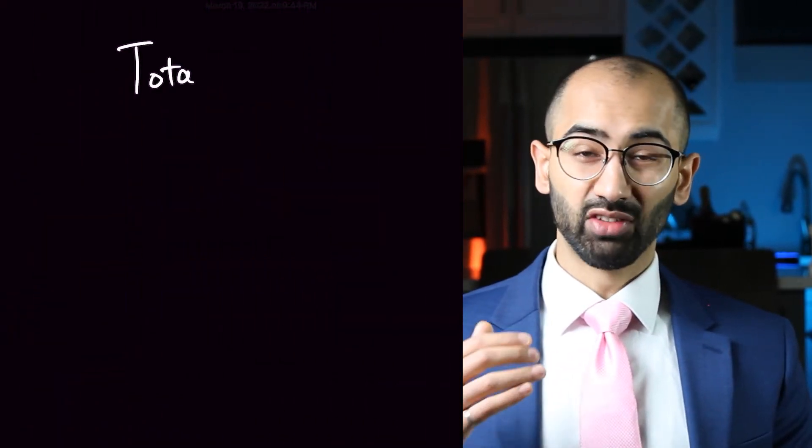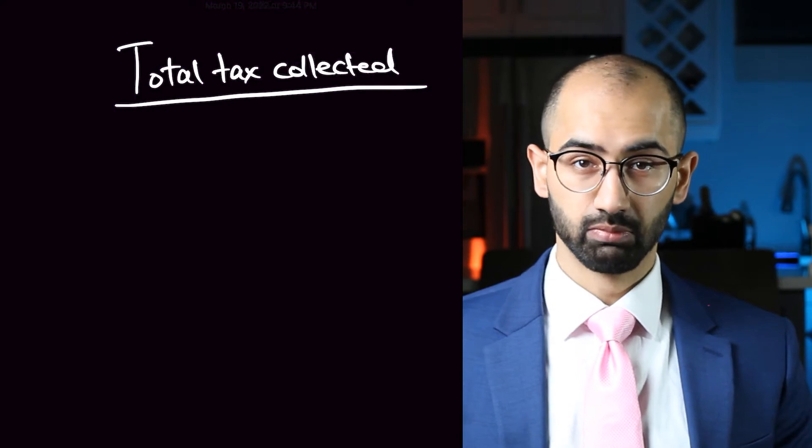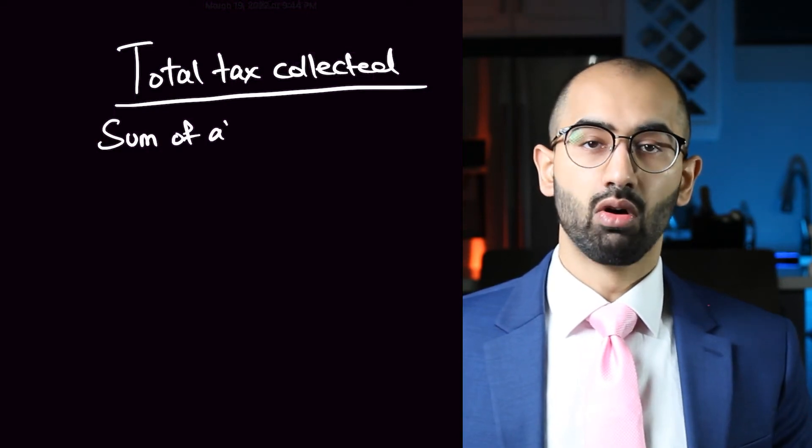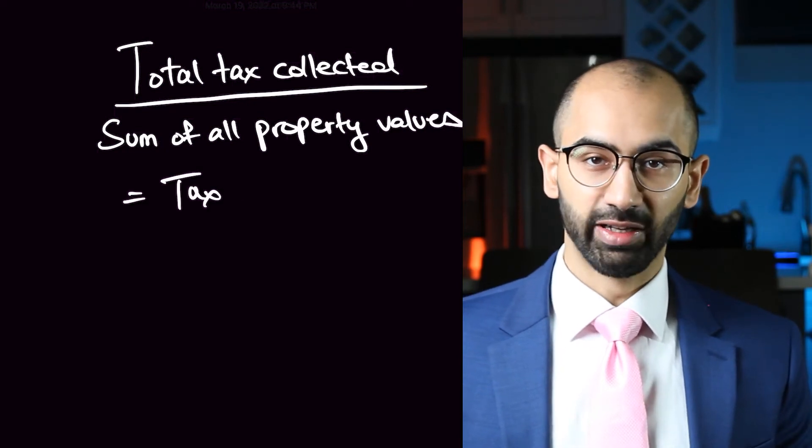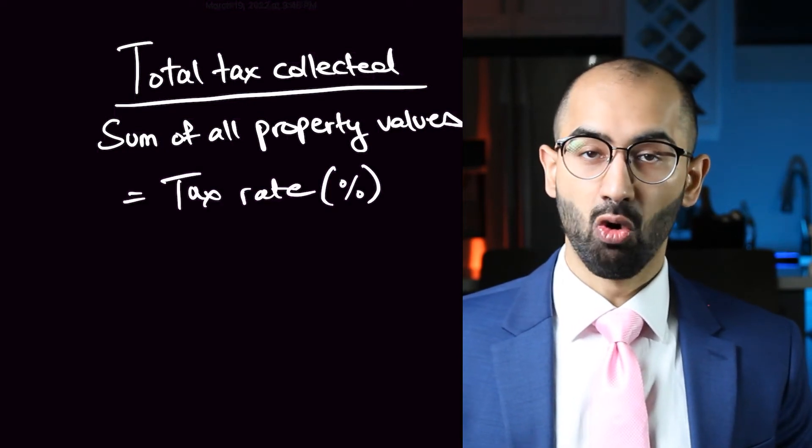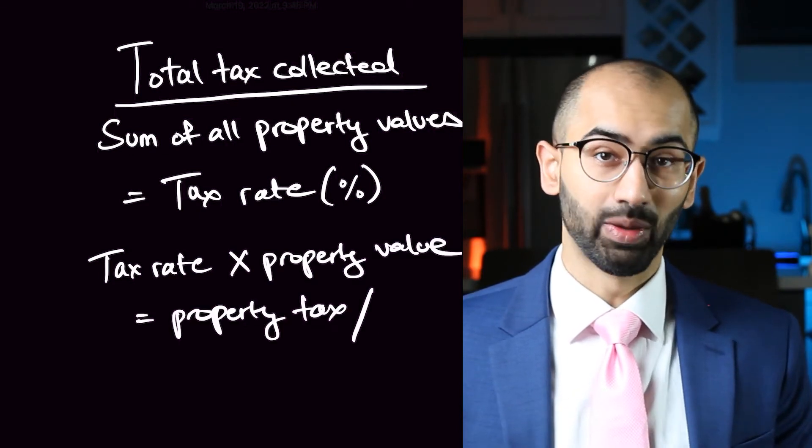On the numerator we have the total amount of tax that the government collects for the services that they're providing. On the denominator we have to sum all the values of all the properties that are assessed in the city. This gives us the tax rate which you can then multiply by your home's appraised value to get the total amount of property tax that you have to pay throughout the year.